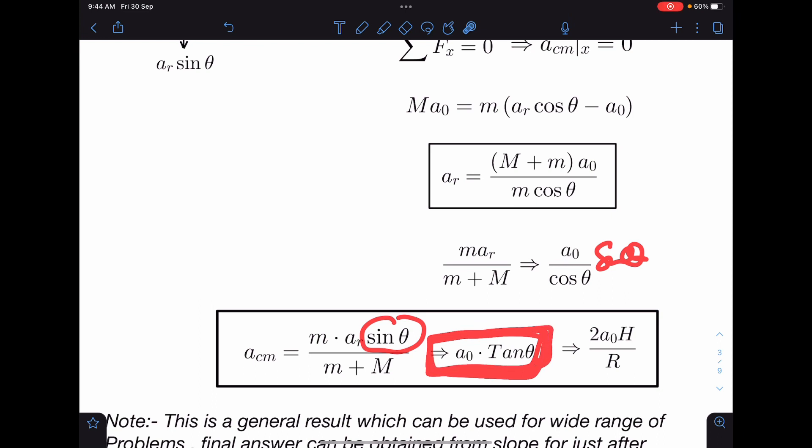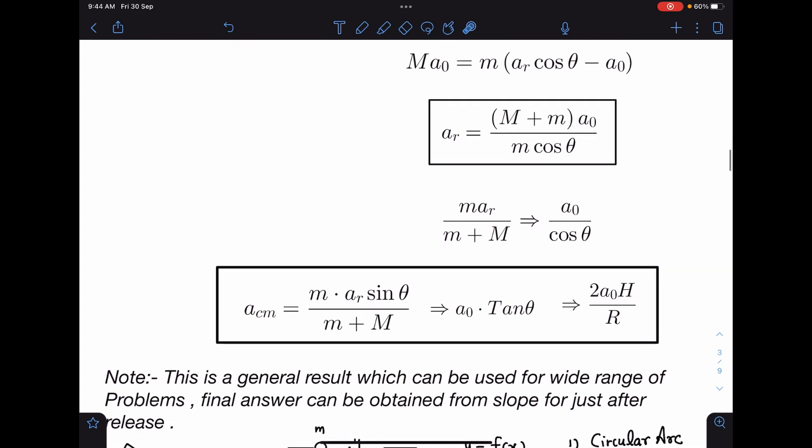Now you see, this result is independent of gravity, it is independent of shape, doesn't depend on which value you are taking. We can write 2a₀h/r, but what I will suggest is just remember a₀tan θ.